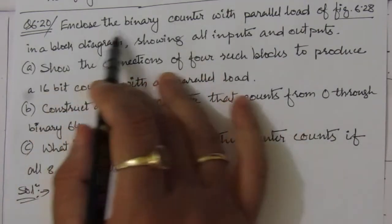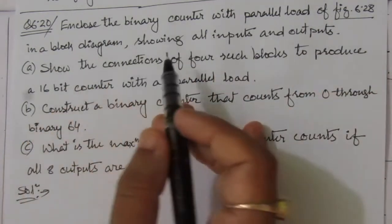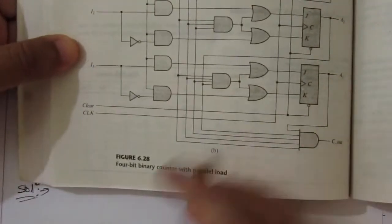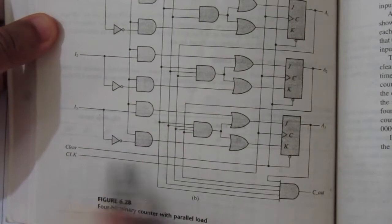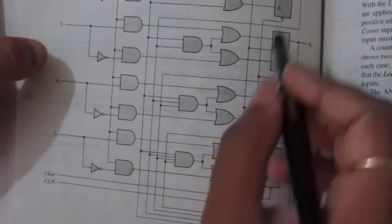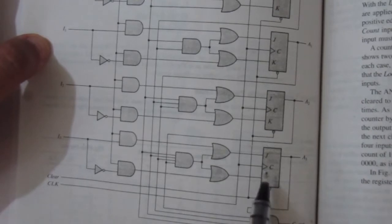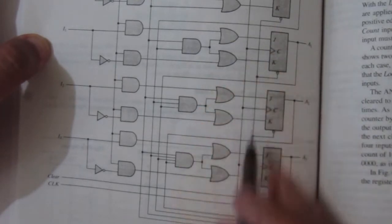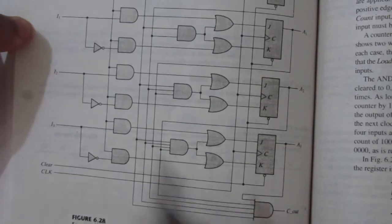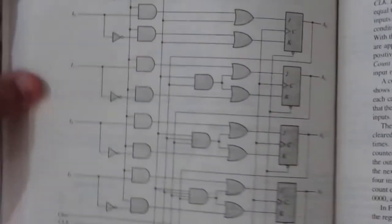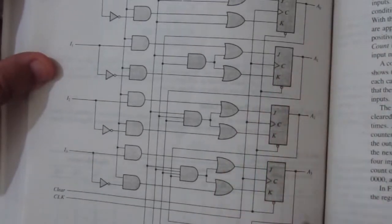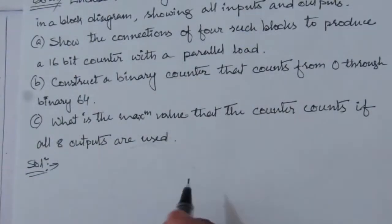First of all, we have to enclose the binary counter of figure 6.28 in a block diagram showing all inputs and outputs. Looking at the circuit diagram — this is figure 6.28, a 4-bit binary counter with parallel load. We can see it has a clear input given parallel to all flip-flops, a clock input also given parallel to all flip-flops, a carry out (cout), a count-in, a load input, and a 4-bit input: I0, I1, I2, and I3. The outputs are four outputs and one cout.